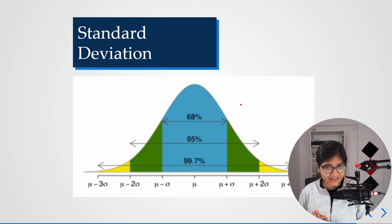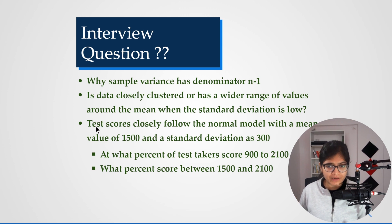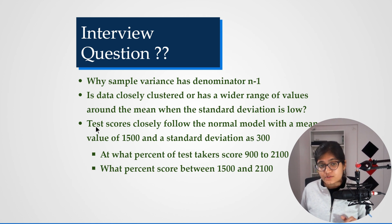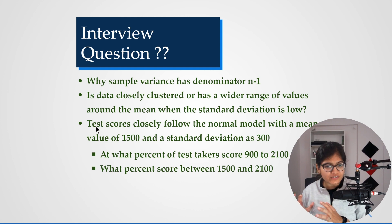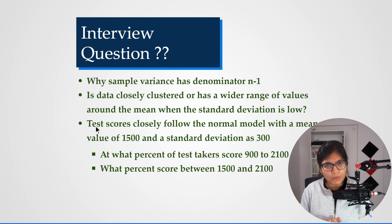Always remember this rule — make sure you know this property whenever you are given a value of mu and sigma. Now, a very interesting interview question: test scores closely follow the normal model, with mean equal to 1500 and standard deviation equal to 300. What percentage of test takers score between 900 and 2100?